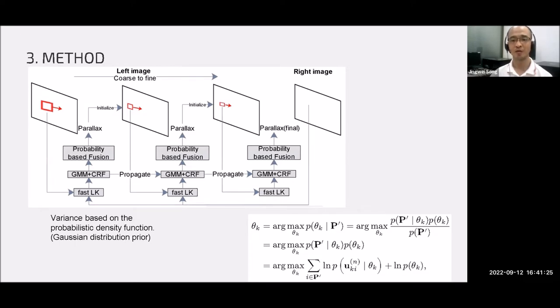The FastLK algorithm is applied to estimate the patch-wise disparity. Then, our GMM and CRF algorithms are used to yield the probability of the patch in the current scale as well as the probability propagated from the last level.